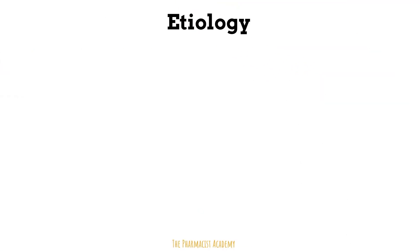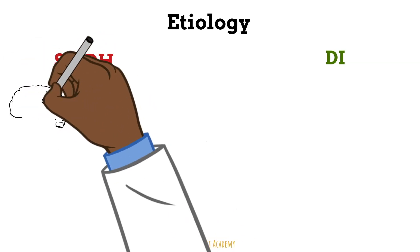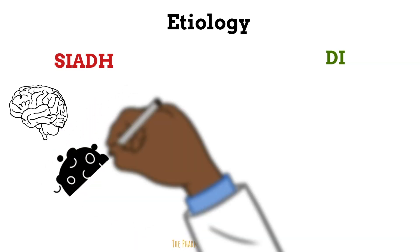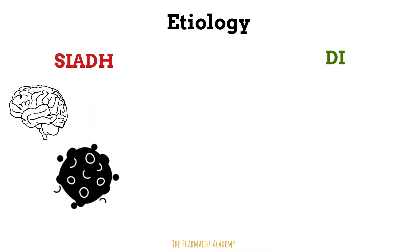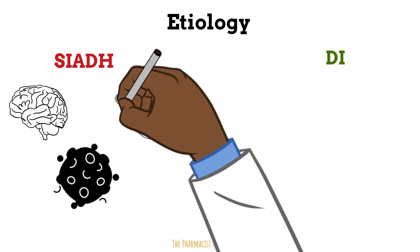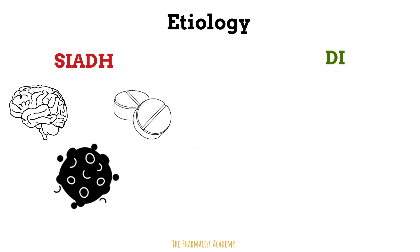So now let's look at the causes of SIADH and diabetes insipidus. For SIADH, a patient may have a malignancy in the brain, which will lead to the hypothalamus releasing a lot of vasopressin, or it can also be a malignancy in the lungs. Even though it's not in the brain, this type of cancer is going to cause your brain to release a lot of vasopressin, as well as drugs such as anticonvulsants and antidepressants.